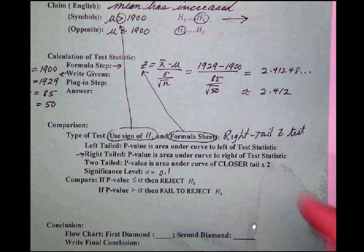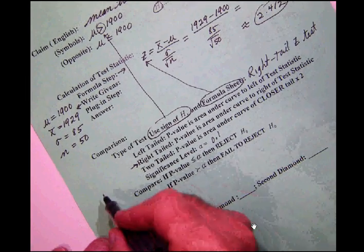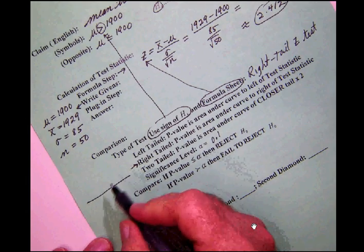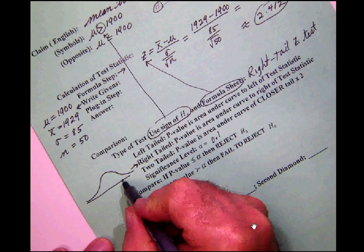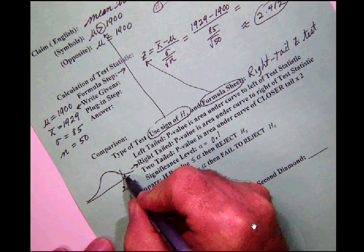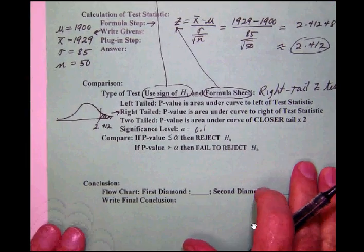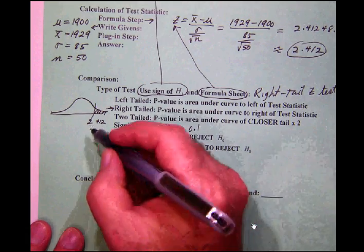And our test statistic, as you recall, was 2.412. So let's make a little bit of a drawing here. Here's our normal curve. Over here, some point is 2.412. The p-value that we're interested in is the area which is under the curve to the right of 2.412.